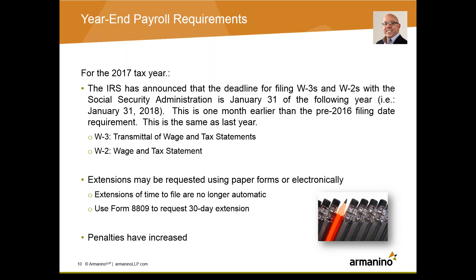If you're unable to make the deadline of January 31st, a Form 8809 must be filed to request a 30-day extension. If you fail to file the W-2s on time, there are penalties. The IRS can assess a penalty ranging from $50 up to $260 per form. For small businesses, maximum penalties are as low as $536,000 a year, and for larger businesses the penalty cap goes up to almost $3.2 million a year.